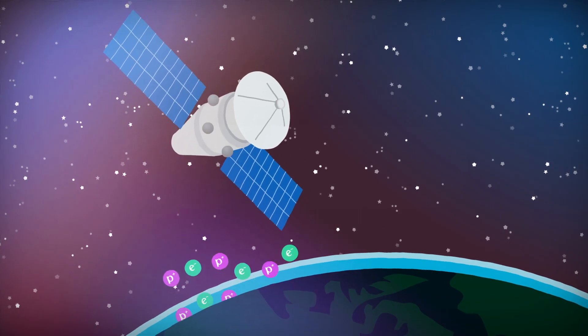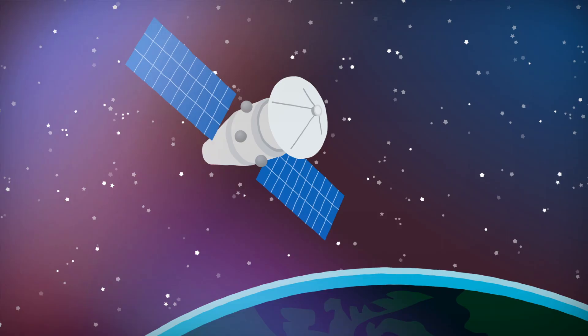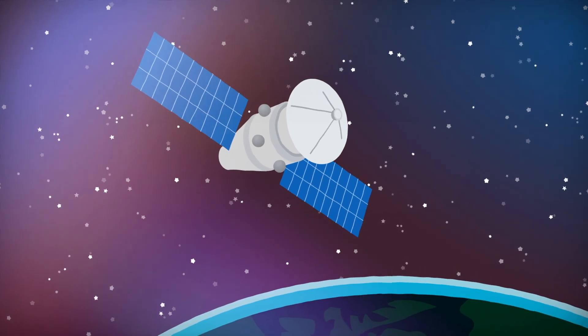If we were hit by a storm as strong as the Carrington event today, it could devastate our interconnected, electrified planet.